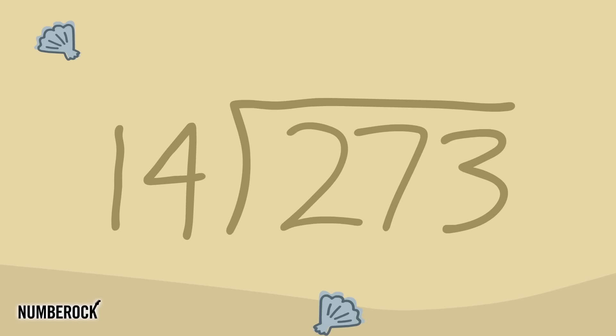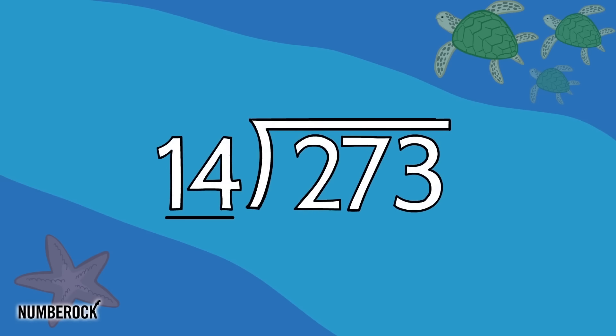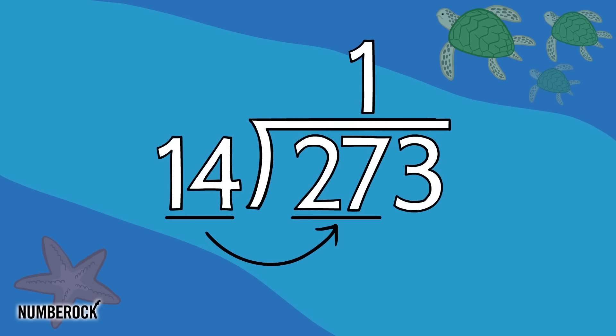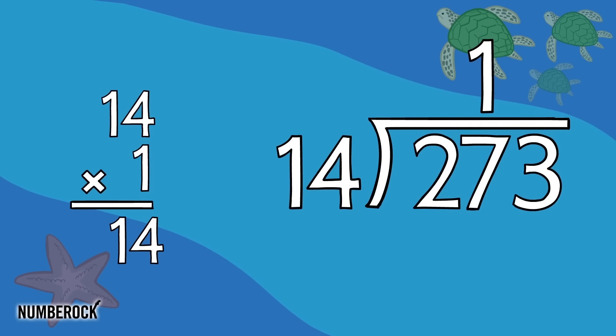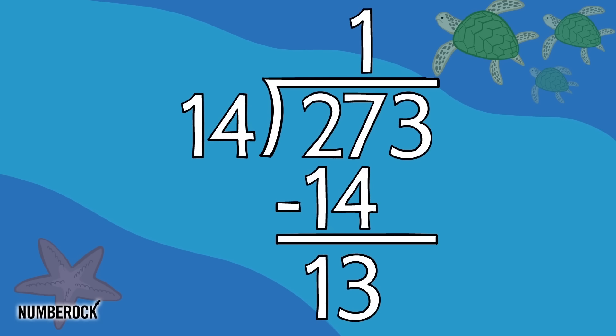First divide the dividend by the divisor. We can fit 1 fourteen into 27. Then multiply 1 by the 14, write the 14 and subtract. The difference is 13.